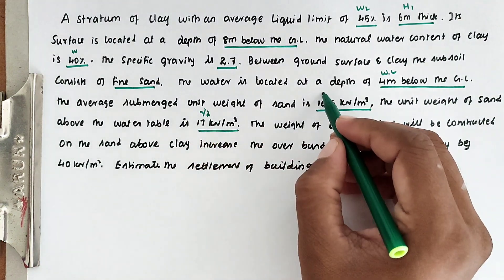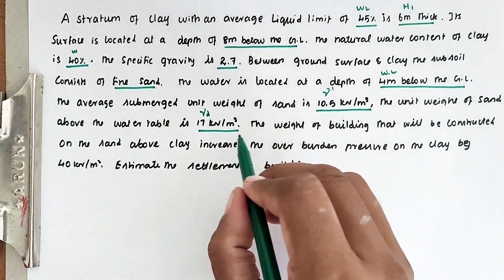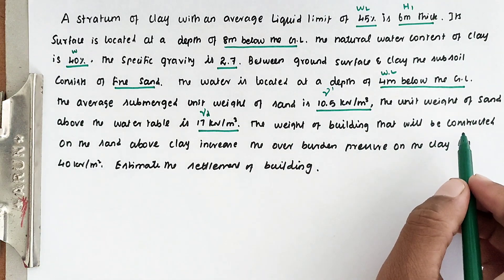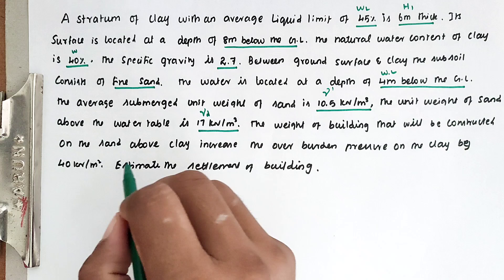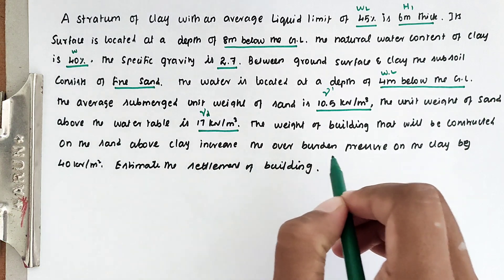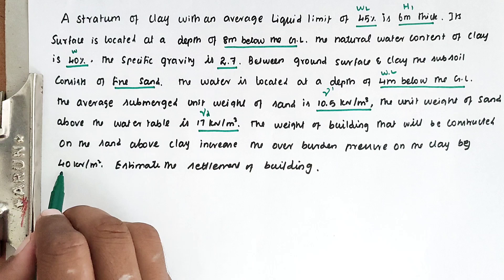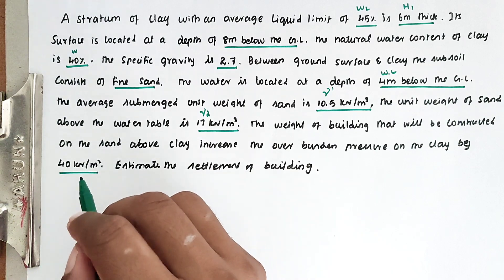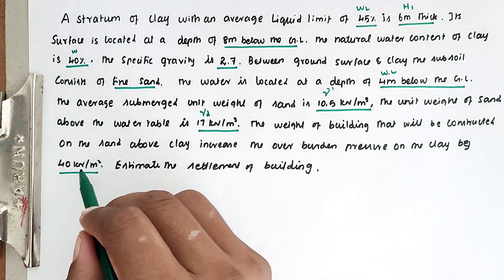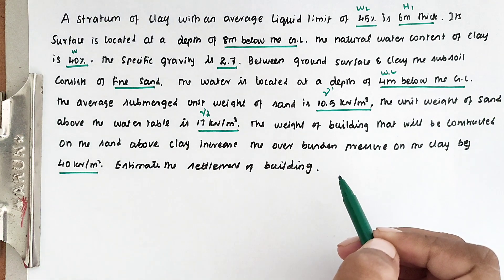This is gamma-d of sand and gamma-submerged of sand. The weight of the building that will be constructed on the sand above the clay increases the overburden pressure of the clay by 40 kN/m². The overburden pressure is 40 kN/m² — estimate the settlement of the building.